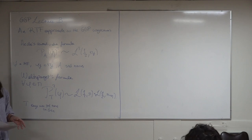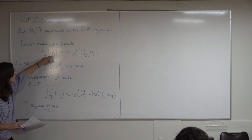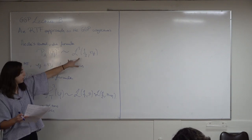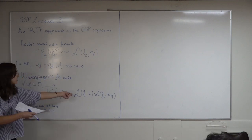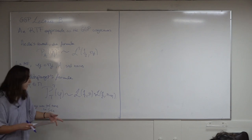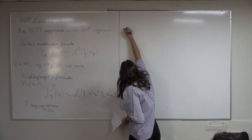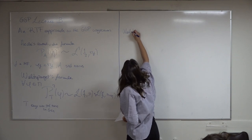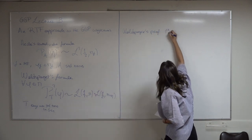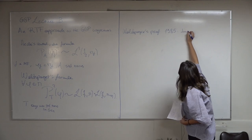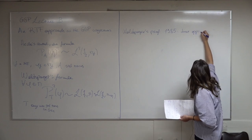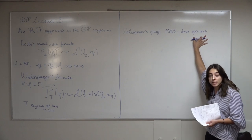We then wrote down Waldspurger's formula, which was much harder to prove because there was no direct relation with the L-value. When we wrote down the explicit formula, we initially had some L-value that we could relate to, but here it's hard to see directly how the two things are related. Waldspurger's proof in 1985 used something called the Shimura correspondence, but we won't talk about this type of proof today.